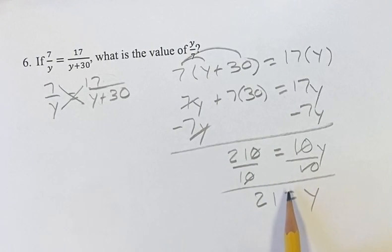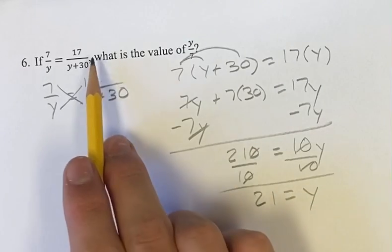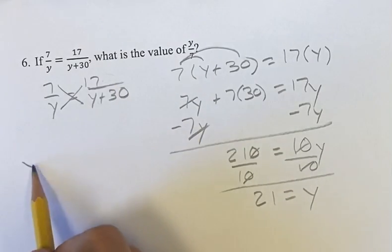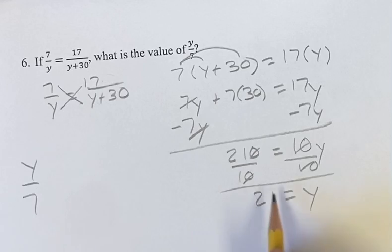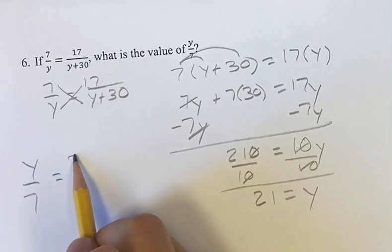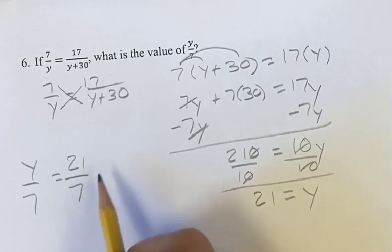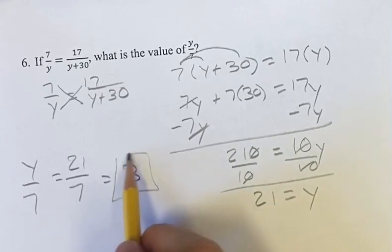So this is our value of y, but that's not actually what the problem is looking for. We're asked, what is the value of y divided by 7? This is really easy now that we have the value of y. So y divided by 7, plug in 21 for y. It's 21 divided by 7, which we know is 3. So 3 is going to be our answer.